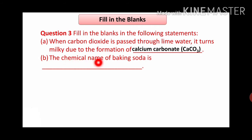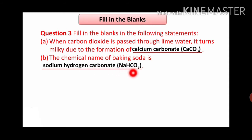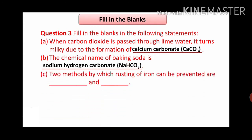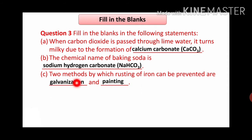Next one: the chemical name of baking soda is dash. Its chemical name is sodium hydrogen carbonate, NaHCO3 - Na is sodium, H is hydrogen, and CO3 is carbonate. It is actually a combination of carbon and oxygen known as carbonate. Next: two methods by which rusting of iron can be prevented are dash and dash. The answer is galvanization and painting. The zinc coating process is known as galvanization, and another option is painting.